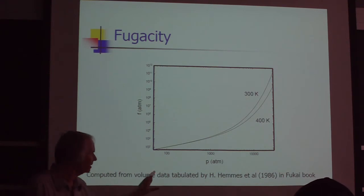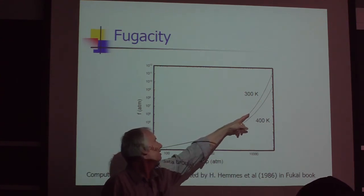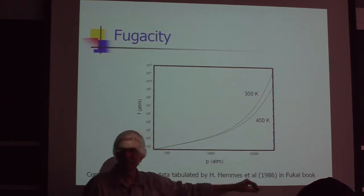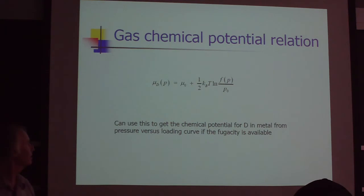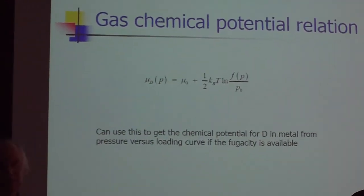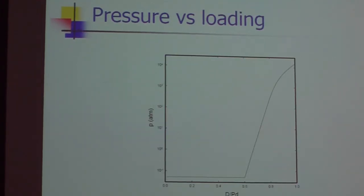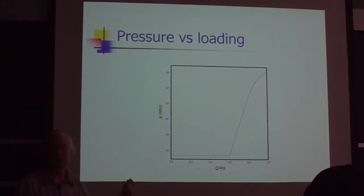Basically, when you get to extremely high pressure, so here's 10,000 atmospheres, you've got a fugacity that could be 10^7 atmospheres, whereas the actual pressure is 10^4 atmospheres. The magnitude difference between the fugacity and the pressure relates to the chemical potential. The fugacity for hydrogen or deuterium is well known. And you can use that. You can start with the pressure versus loading curve.